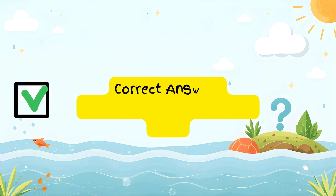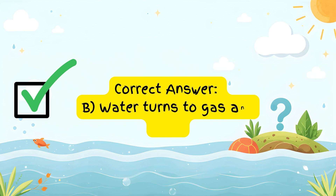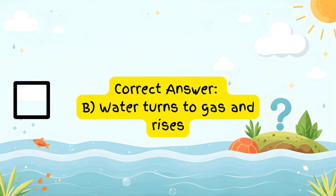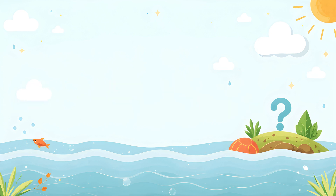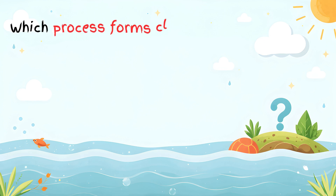Correct answer: water turns to gas and rises. As water vapor rises, it cools down and turns back into tiny water droplets, forming clouds. This process is called condensation. Which process forms clouds in the water cycle?